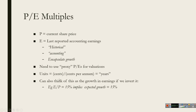If you invert the PE ratio — earnings divided by price — you get the earnings yield. At, say, 15%, that also gives you the implied growth rate in earnings. There's useful information you can just glean by looking at the number.